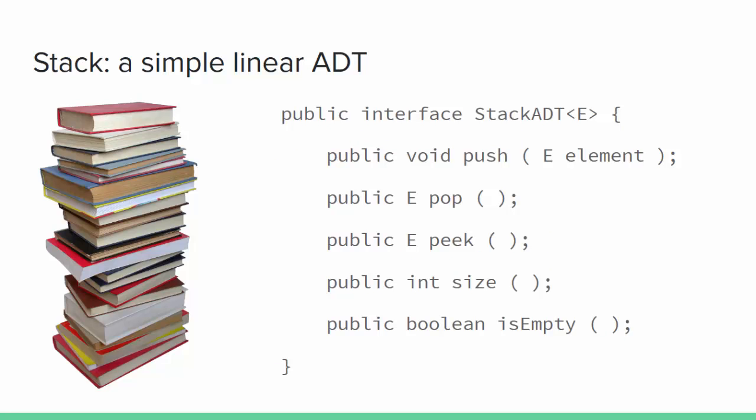This model can be completely defined in a stack interface with just a few methods. These are, by the way, the most common names used for stack operations. The push operation adds a new element to the top of the stack. The pop method removes and returns the top element. Peek returns the top element but doesn't remove it. The size method tells you how many elements are in the stack, and isEmpty tells you if the stack is empty.